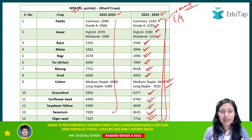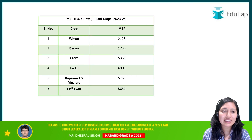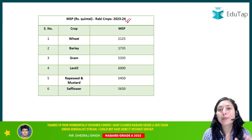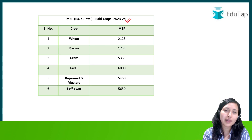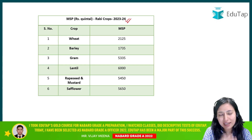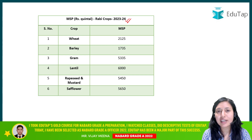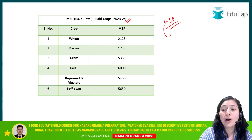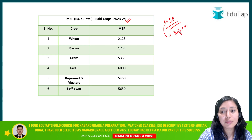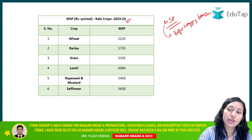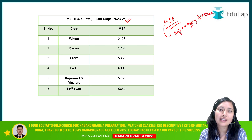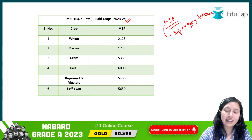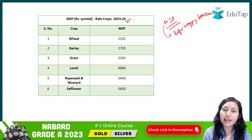Now let's talk about Rabi crops. The MSP for Rabi crops for 2023-24 — we are currently in the Kharif season, but the past year MSP for Rabi is the current one for now. The MSP is announced before the cropping season of that particular crop. So before the Kharif cropping season, Kharif MSP is announced, and similarly before the Rabi cropping season, Rabi MSP is announced. The 2023-24 label refers to the Rabi marketing season of next year, announced ahead of harvesting.